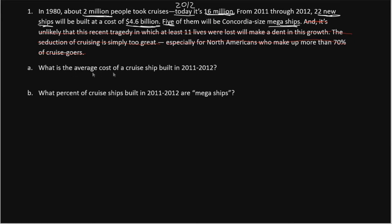Now, the first question asks, what's the average cost of a cruise ship in the year 2011 to 2012? To find the average, we take the total cost and divide that by the number of ships. Our total cost, where it says the cost, is $4.6 billion. So on the top, we place $4.6 billion.